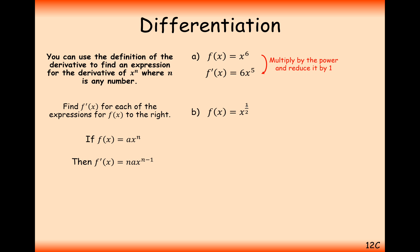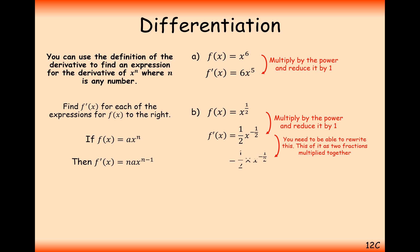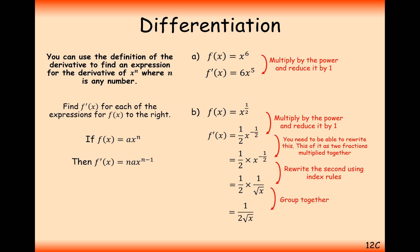A slightly more difficult one: x to the power of a half, or in other words the square root of x. You take the half and multiply it at the front, giving a half at the front, and then do a half take away 1, which gives minus a half. So this is (1/2)x to the minus half. Writing this as a single fraction, we split up x to the minus half and combine it with the half to get 1 over 2 root x.